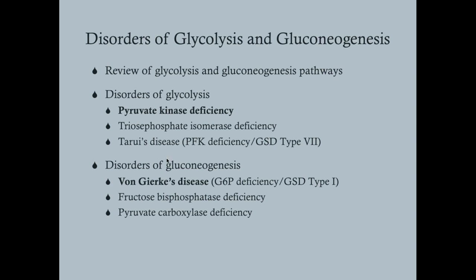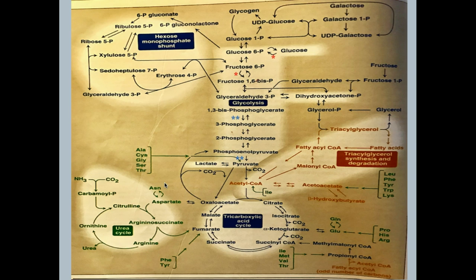We'll cover those two main disorders first, then briefly discuss four others — though you can stop after the first two since the others are rarer. For glycolysis, the major substrate is glucose and the goal is pyruvate. You can also enter the glycolysis chain with fructose or glycerol at various points, but the major pathway is glucose to pyruvate.